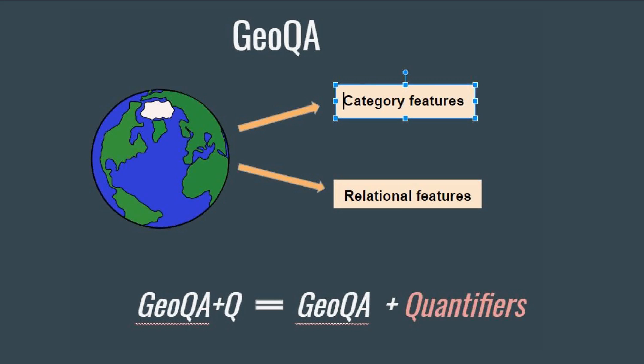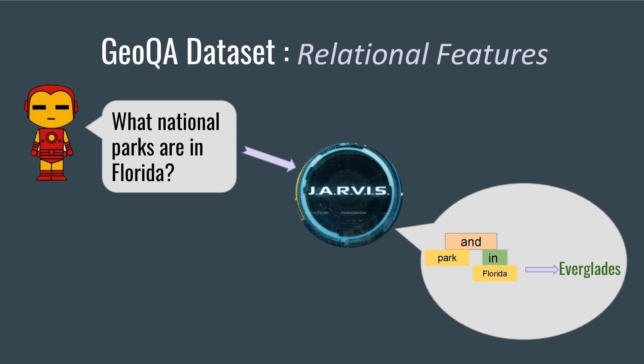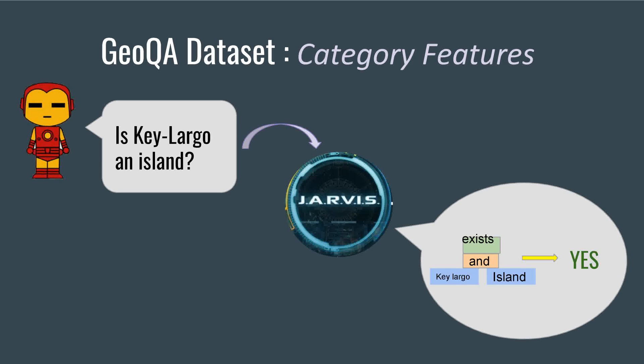To test the parser's ability to predict different structures, a new version of the dataset was introduced which acknowledges quantifiers as GQA+Q. In the GQA dataset, the world representation consists of category features used by the find module and relational features used by the relate module. The original dataset didn't include quantifiers, treating questions like 'what cities are in Texas' and 'are there any cities in Texas' identically. However, in this dataset there was a Boolean value answer for the latter.